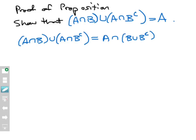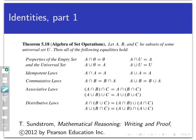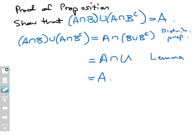By our lemma, B union B complement is the entire universal set, so I can replace the thing in parentheses with just U. Now I have A intersect U. I had another set property: A intersect the universal set equals A itself — the properties of the empty set and the universal set. So I can rewrite what I have as just A. That proves it: A intersect B union A intersect B complement equals A intersect (B union B complement) by the distributive property, which equals A intersect U by my lemma, which equals A by the properties of the empty set and the universal set.